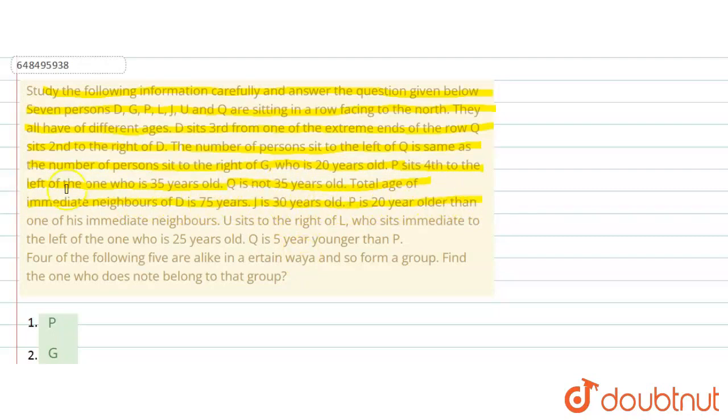P is 20 years older than the one who is immediate neighbor of its neighbor. U sits to the right of L. L who sits immediate left of one whose age is 25 years old. Q is 5 years younger than P. Four of the following are alike in certain way and form a group. Find the one that doesn't belong to that group.